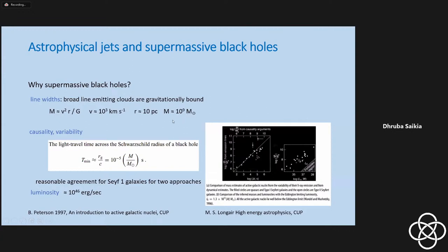We have supermassive black holes in the centers of galaxies, which range from about a few million solar masses to about 10 to the power of 10 solar masses or so. We also saw that we could arrive at the masses of the objects from variability arguments, causality arguments, where Rg — the Schwarzschild radius of a black hole — is given by 2GM over c squared. From the timescales of variability, you can also try and infer a mass scale.